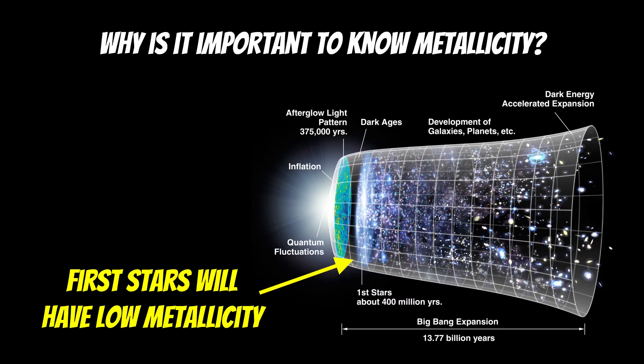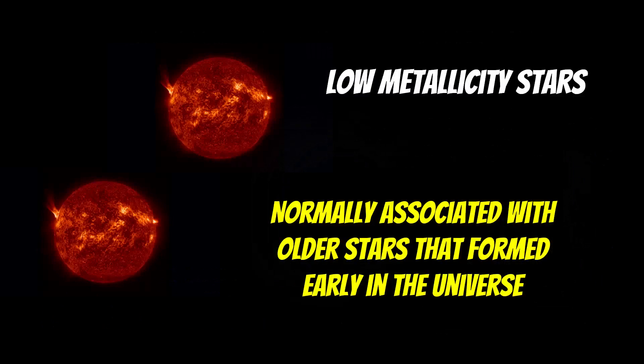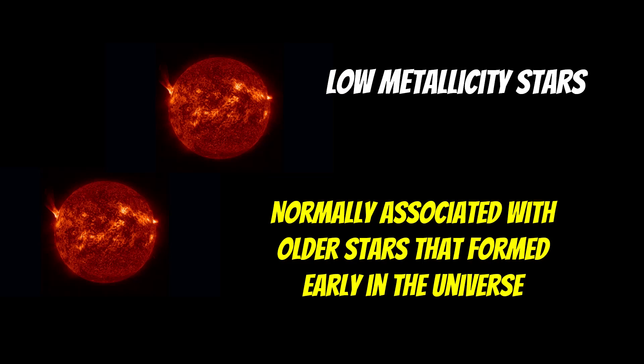So low metallicity stars are going to have formed earlier on in the universe. If they're still around now, it's likely that they are quite old stars. These low metallicity stars are normally associated with the early universe and will be very old. Some could be smaller stars that take a very long time to go through their evolutionary cycle — like red dwarf stars, some of which can exist longer than the universe has currently been around, so they will still be present today.